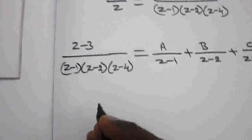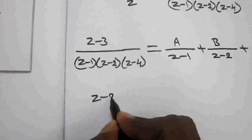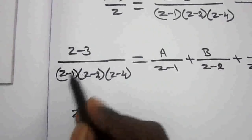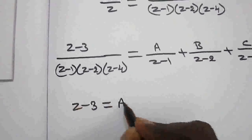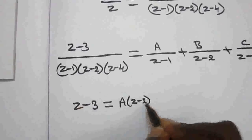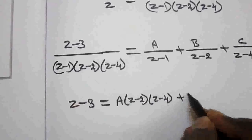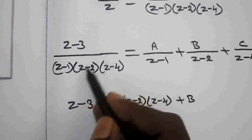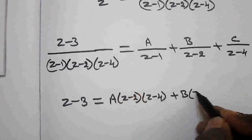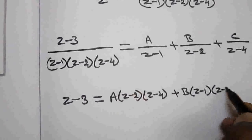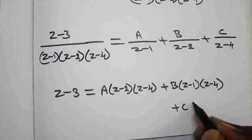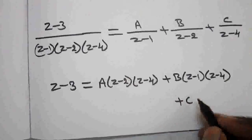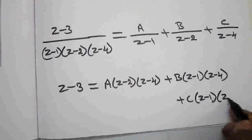Taking LCM: z−3 equals A(z−2)(z−4) plus B(z−1)(z−4) plus C(z−1)(z−2). To find B, put z equals 2: 2−3 equals −1 equals B(1)(−2), so B equals 1/2. To find C, put z equals 4: 4−3 equals 1 equals C(3)(2), so C equals 1/6.